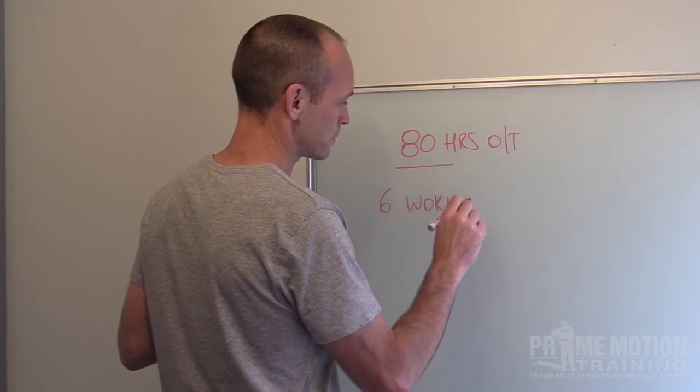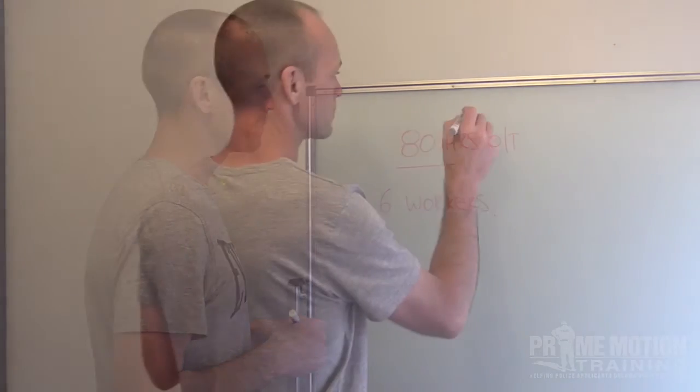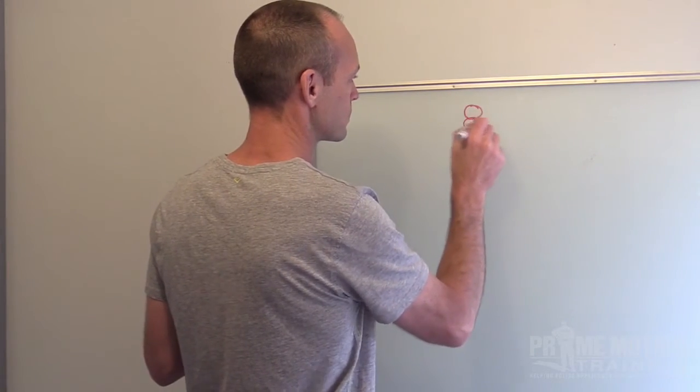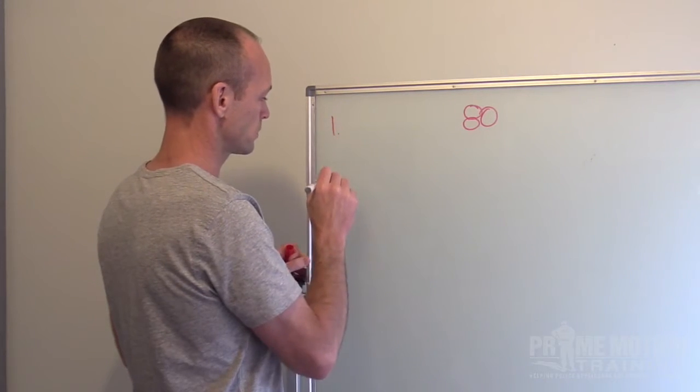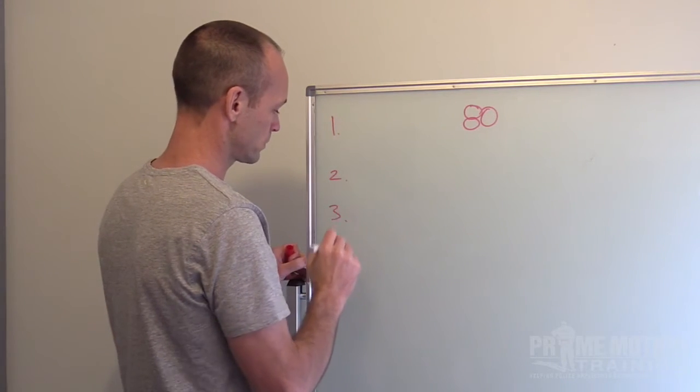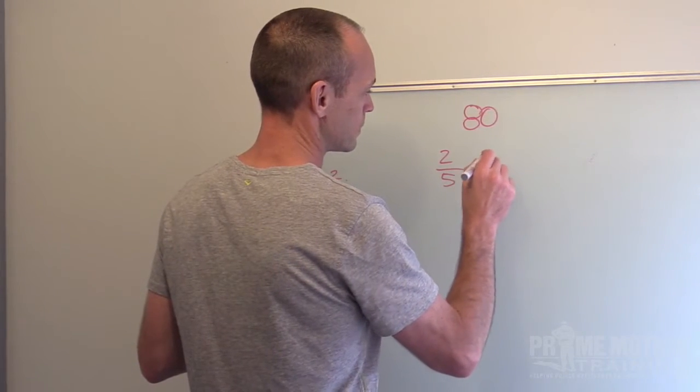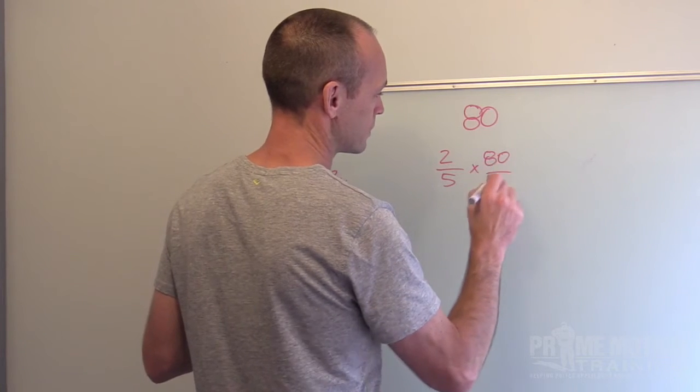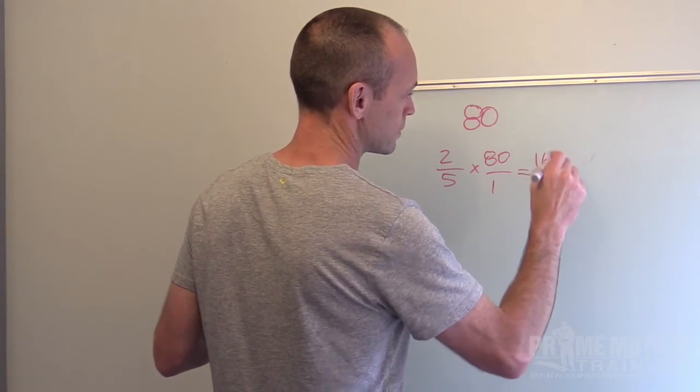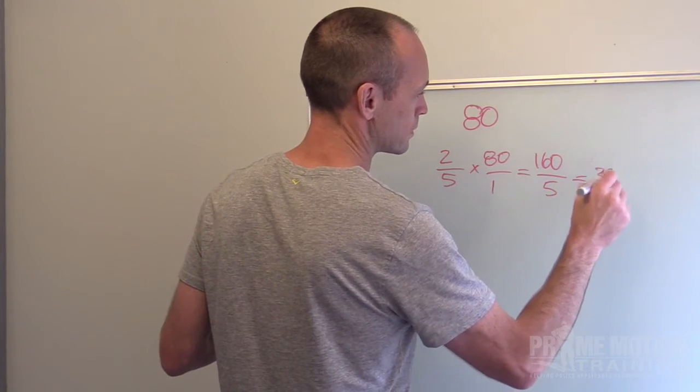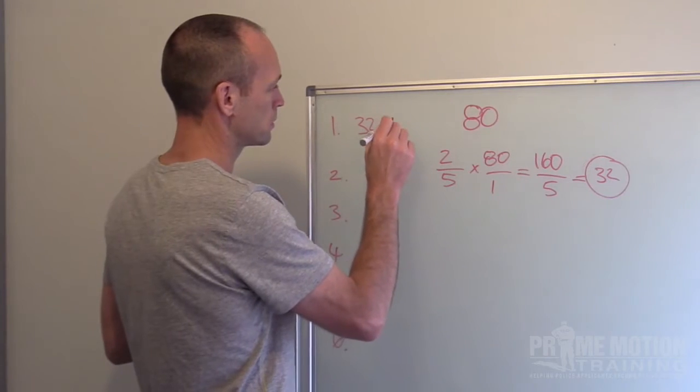So question 20 says last week six workers did a total of 80 hours overtime. So we'll place our 80 hours at the top and we've got our six individual workers down the side here. The first worker did two-fifths of the total 80 hours overtime. That means that worker number one did 32 hours overtime.